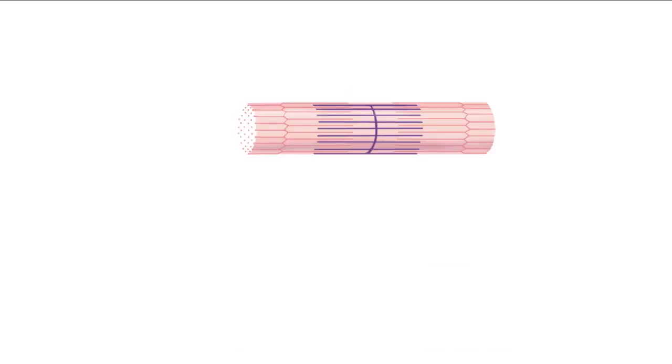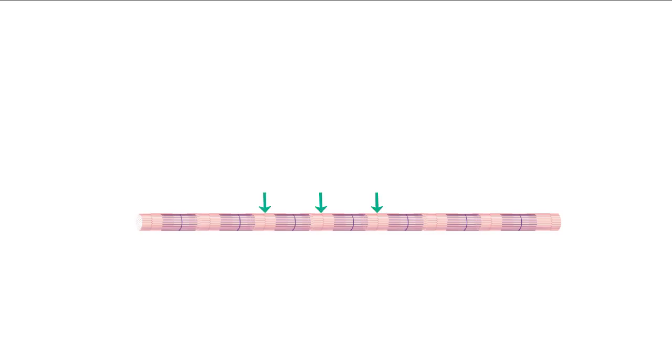The Z-lines are made of actin and form the ends of sarcomeres. The Z-line is made entirely of actin; the light band along the myofibril is shared between two sarcomeres; and the darker color is myosin. A myofibril is a series of sarcomeres attached end to end at their Z-lines.